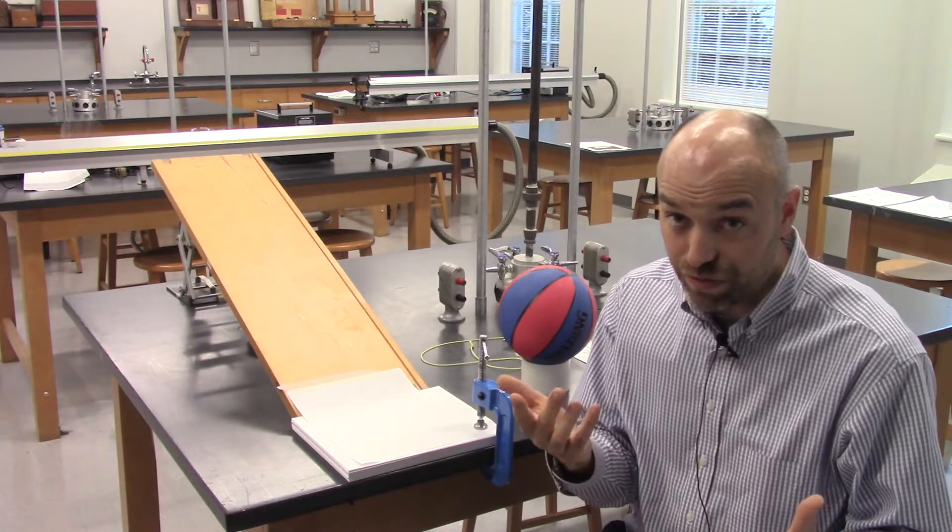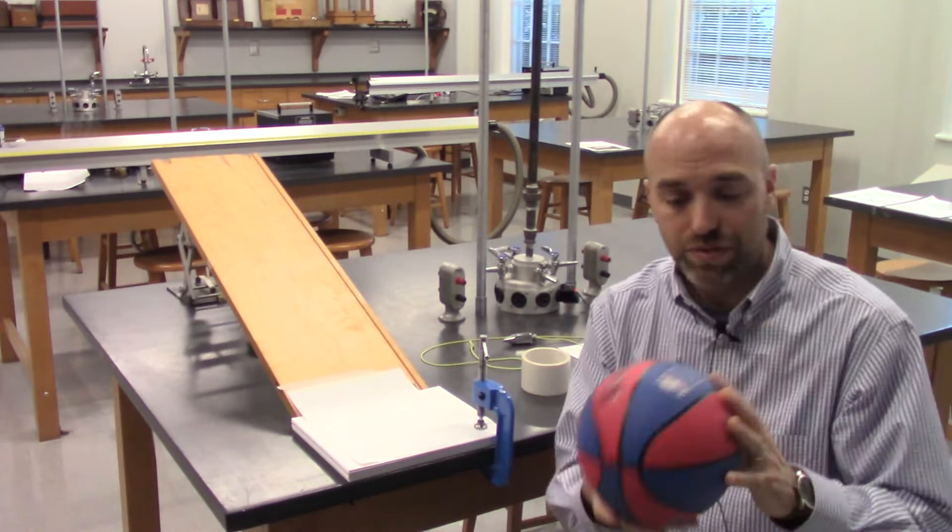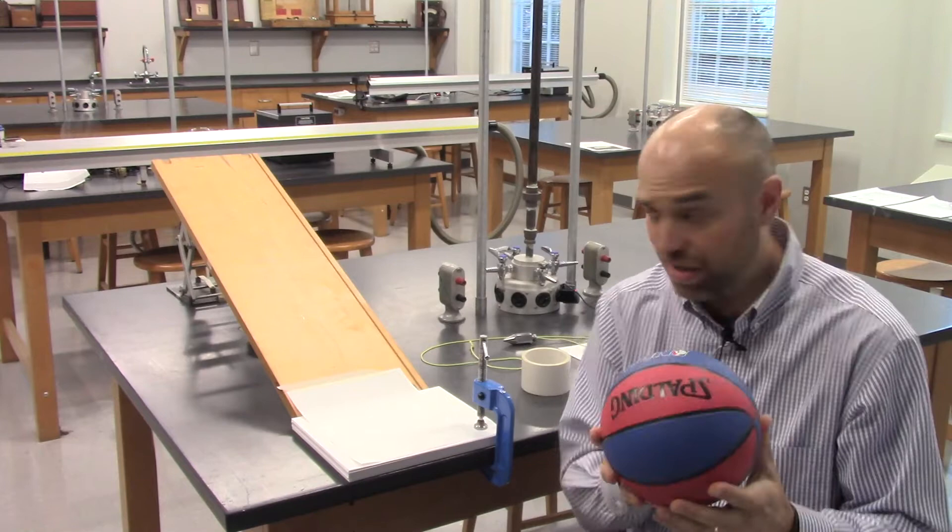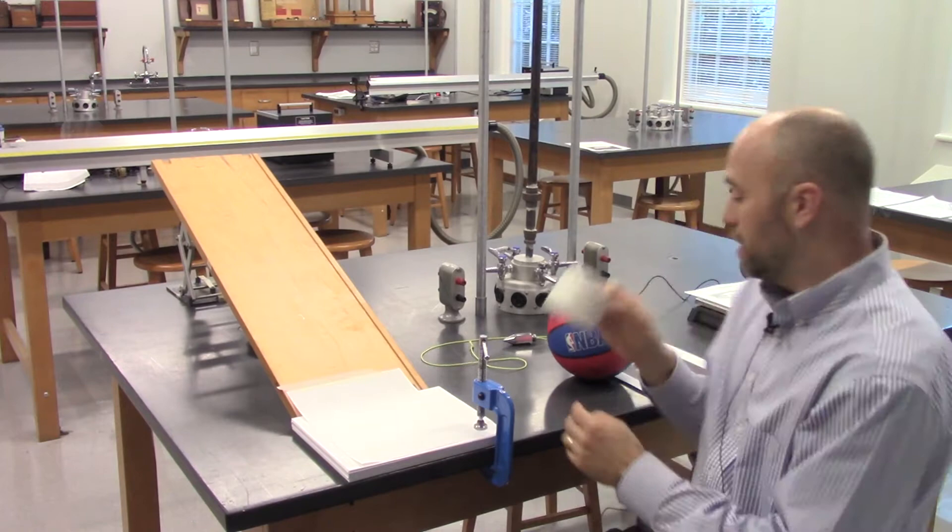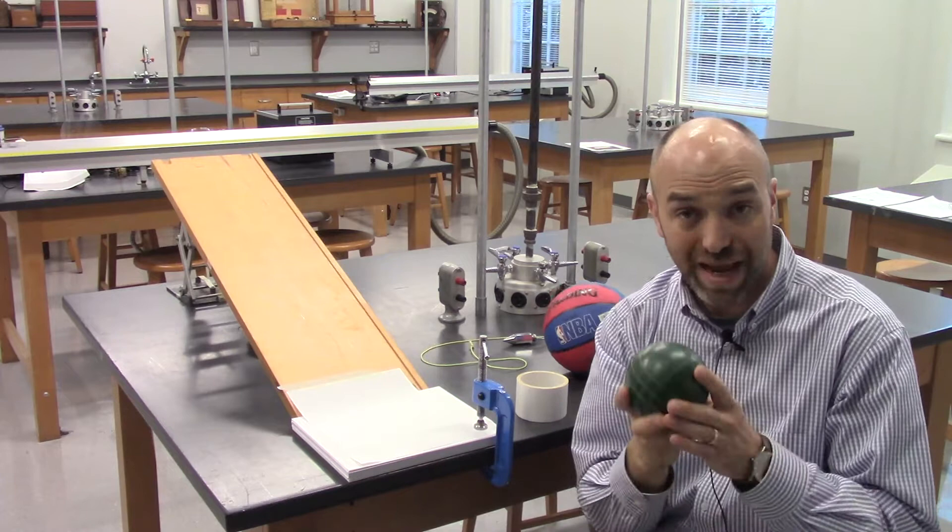You've got three objects. You've got a hollow sphere. Why do I mean it's hollow? Well there's nothing in it. It's hollow. You've got a hollow hoop and a solid sphere. Now they're all different masses and they're all different radii. You have to measure all that stuff.